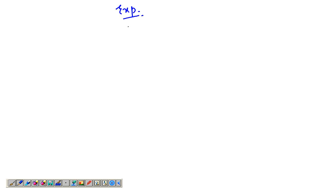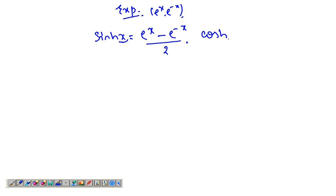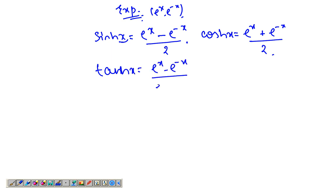Let's talk about expressing the hyperbolic functions in terms of the exponential functions, that is e^x and e^(-x). sinh(x) is simply (e^x - e^(-x)) / 2, and cosh(x) is (e^x + e^(-x)) / 2. This is how you express them in terms of the exponential function. So tanh(x) would be (e^x - e^(-x)) / (e^x + e^(-x)).